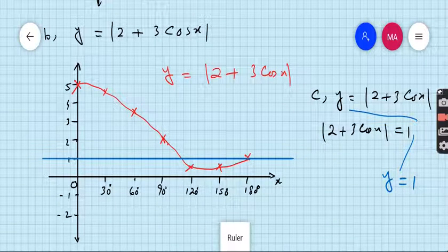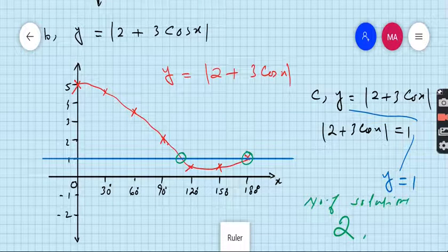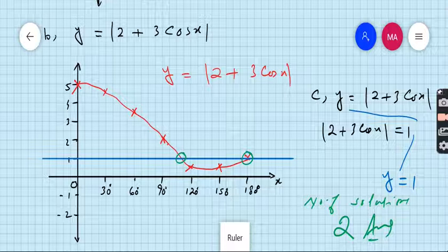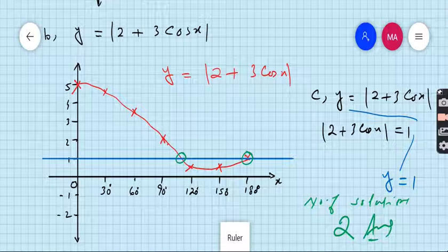If you see carefully, both the graph cuts at 2 points. So the number of solutions are 2. This is our final answer. Values are not required, but only requirement is to write the number of solutions. There are 2 points between line and the curve, and these 2 points are the solutions.